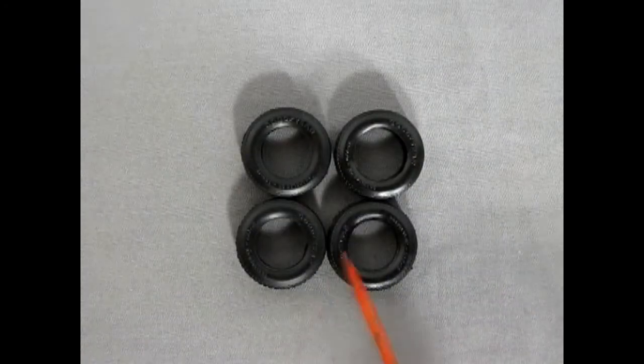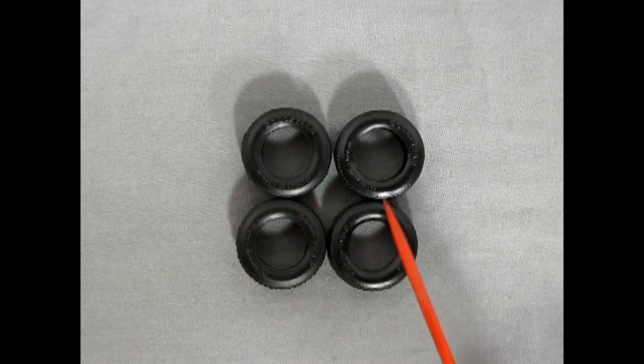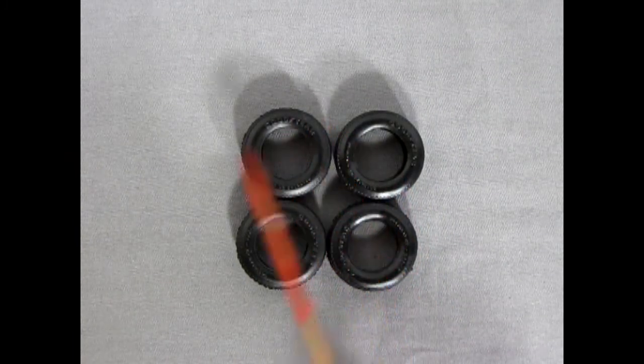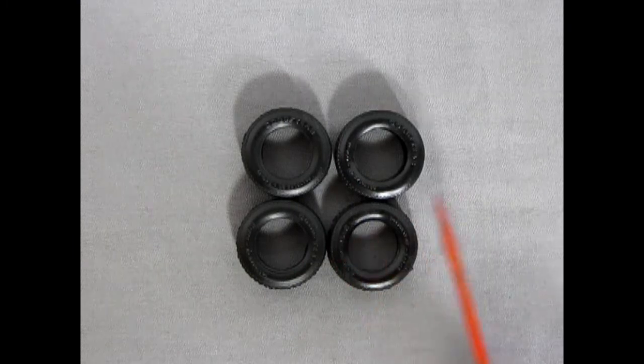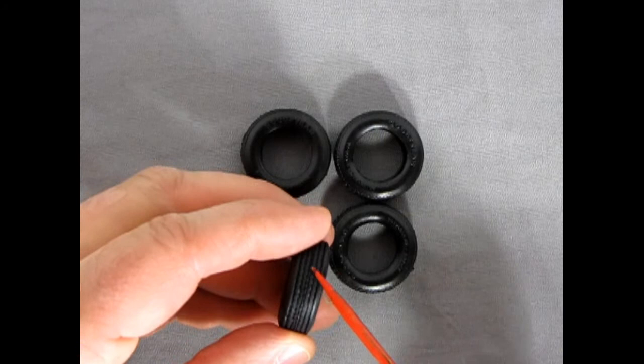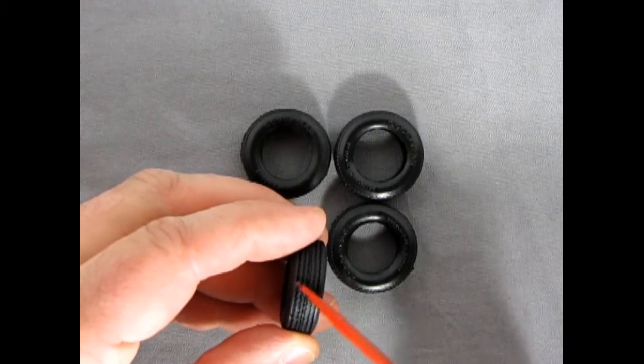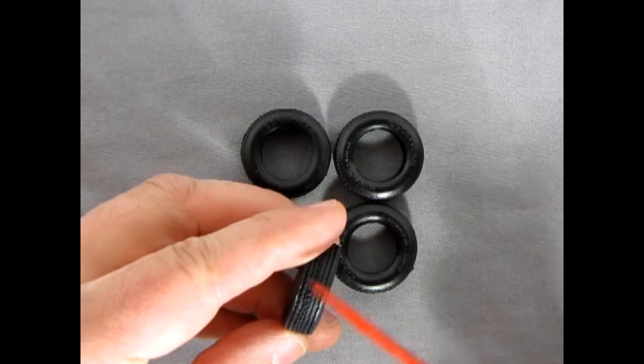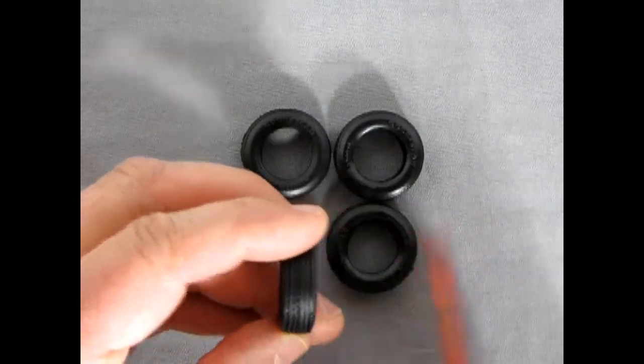Next up, we have our four Goodyear Polyglass GT tires. And these, of course, are the bias belted tires that I've shown in many videos in the past. Which means that the cords in here are running this way, and then this way, and then they have steel belts going around this way.